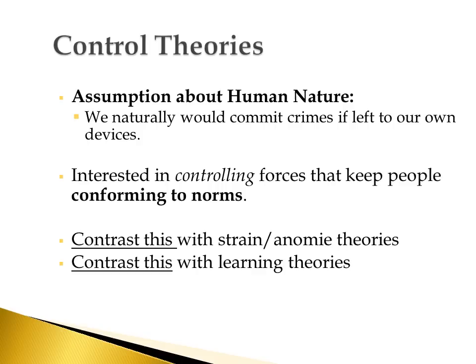In control theories, they're really asking two fairly similar questions: what causes people to conform and what frees people to commit crime? Think about how different this is from the ideas in strain and anomie theory. In those theories, people if left to their own devices are socially compliant beings — it takes strain and pressure to push someone into crime. That's a completely different take on human nature from control theory. In strain and anomie theory, humans are assumed to be naturally compliant and social, while in control theory the assumption is that humans are naturally self-serving.